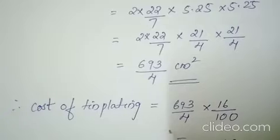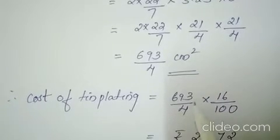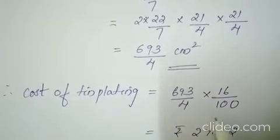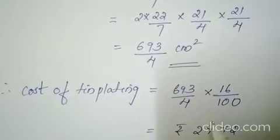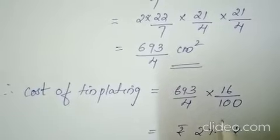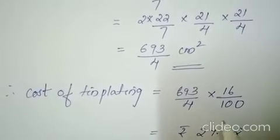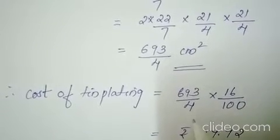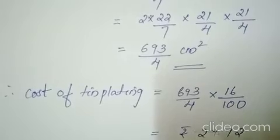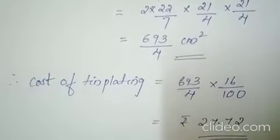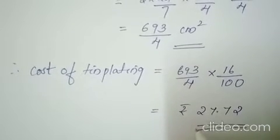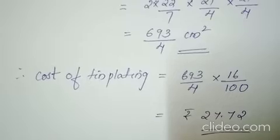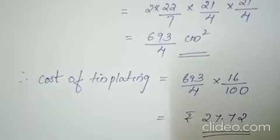Cost of tin plating equals 6.93 into 4 into the rate of Rs. 16 per 100 cm square, that is 16 by 100. While calculating this, you will get the answer Rs. 27.72.